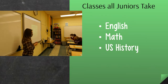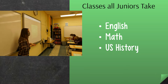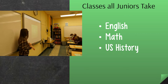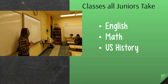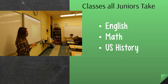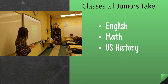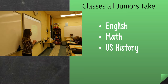Classes that all juniors take next year: everyone will take English, math, and U.S. History. Your current teachers in these subjects — your current English teacher, math teacher, and Western Civ teacher — will sign off on which option you will take in each area next year. There are different options for each, and they will talk with you about what you're appropriate for, what they would recommend, and what you need to move on.